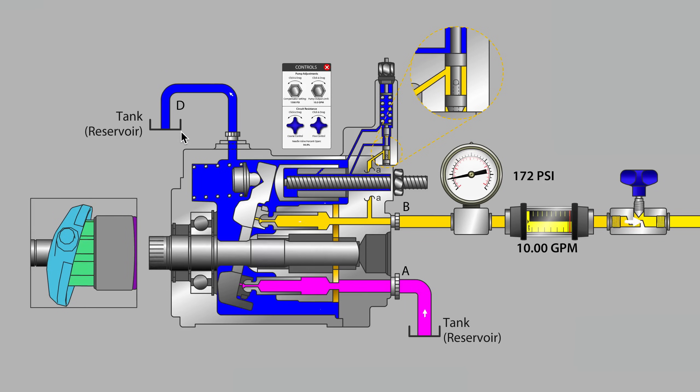We have the tank reservoir symbol showing here. The reason why it's important to understand the sources of the flow on the case drain line is to help understand the importance of maintaining a clear line back to tank with no obstructions present for the sake of the life of the pump.